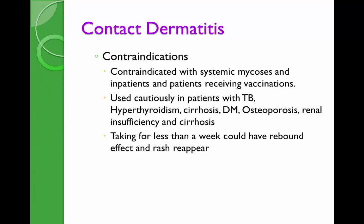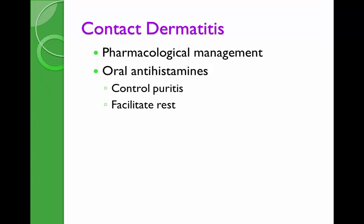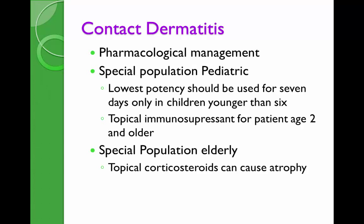Contraindications for topical and systemic steroids include autoimmune diseases — using steroids can potentiate adverse effects such as osteoporosis and renal insufficiency. They are also contraindicated in patients with immunodeficiency such as systemic mycosis. Other therapies include immunomodulators that are T-cell inhibitors — tacrolimus or pimecrolimus — effective for atopic dermatitis when corticosteroids do not resolve the condition. Oral antihistamines help avoid pruritus and lichenification.